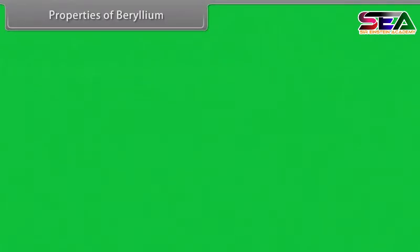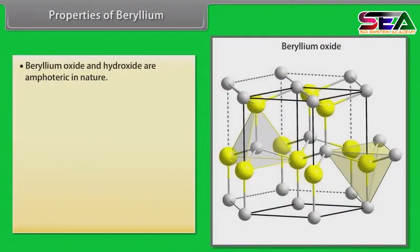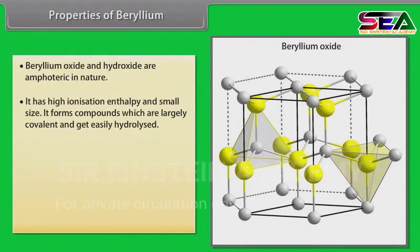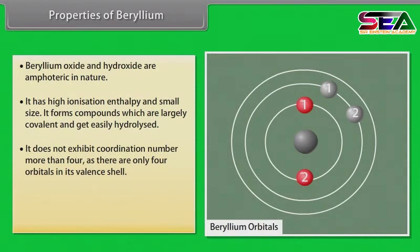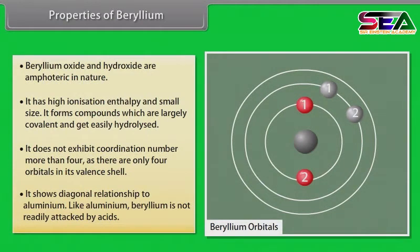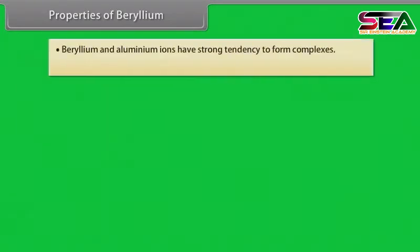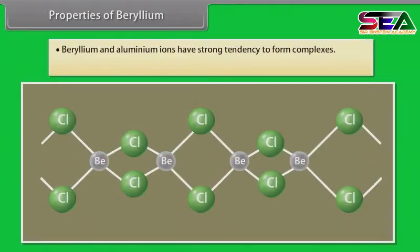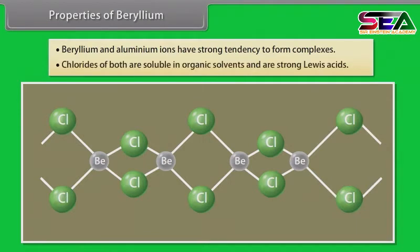Beryllium oxide and hydroxide are amphoteric in nature. It has high ionization enthalpy and small size. It forms compounds which are largely covalent and get easily hydrolyzed. It does not exhibit coordination number more than 4, as there are only 4 orbitals in its valence shell. It shows diagonal relationship to aluminium. Like aluminium, beryllium is not readily attacked by acids. Beryllium and aluminium ions have a strong tendency to form complexes, and the chlorides of both are soluble in organic solvents and are strong Lewis acids.